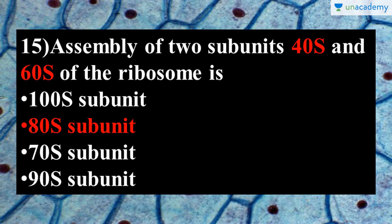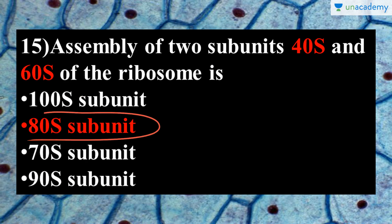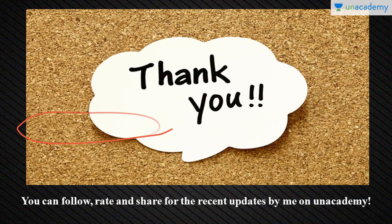The final question is: the assembly of two subunits 40S and 60S gives which type of ribosome? The answer is 80S, according to the sedimentation coefficient of the ribosome. Thank you everyone — please follow, rate, and share for recent updates on Unacademy. Thanks.